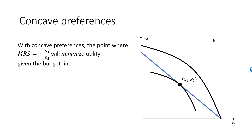Any other bundle on the budget line will reach a higher indifference curve. The optimal bundle in this case is the boundary bundle, X1 star, X2 star. An individual with strictly concave preferences will always select a boundary bundle.